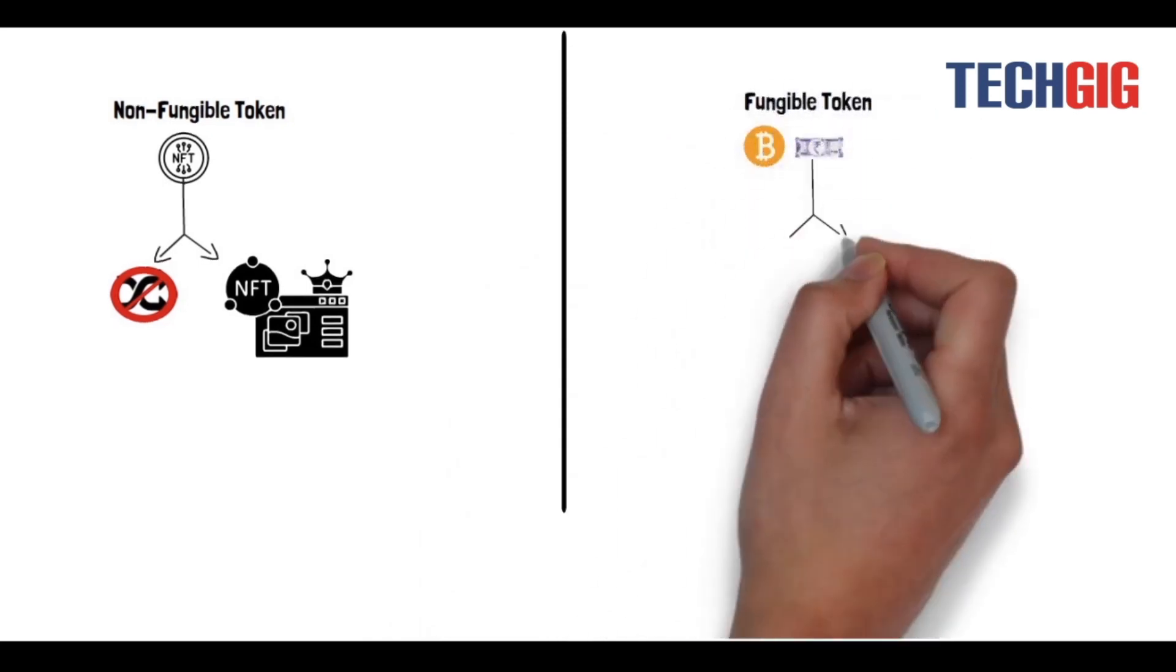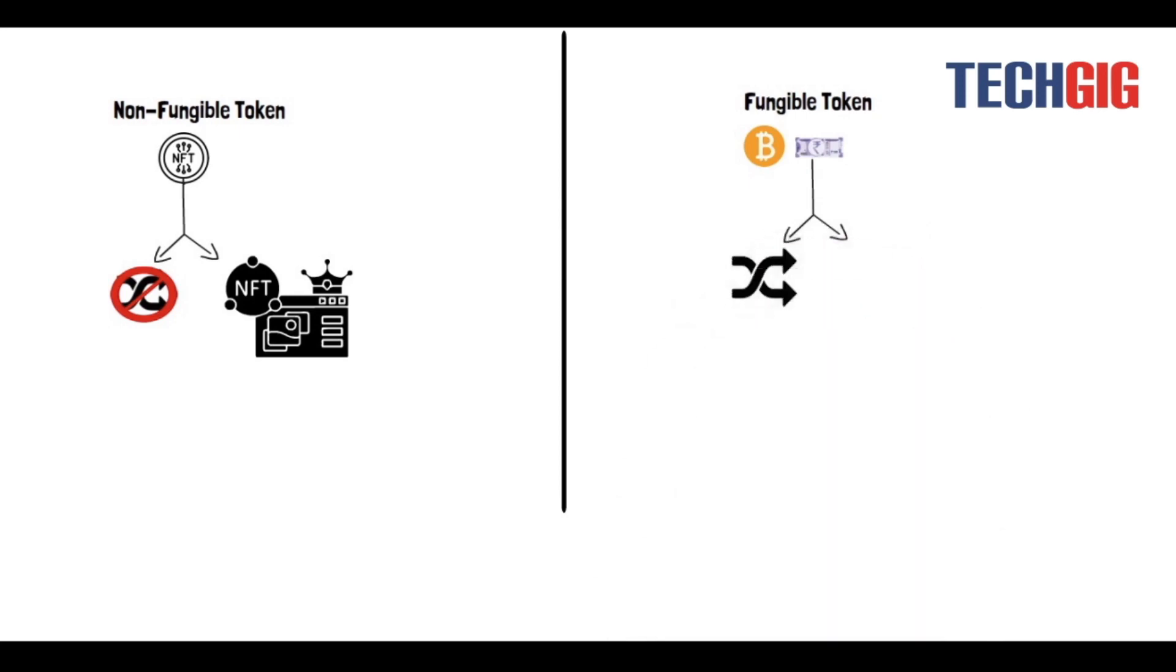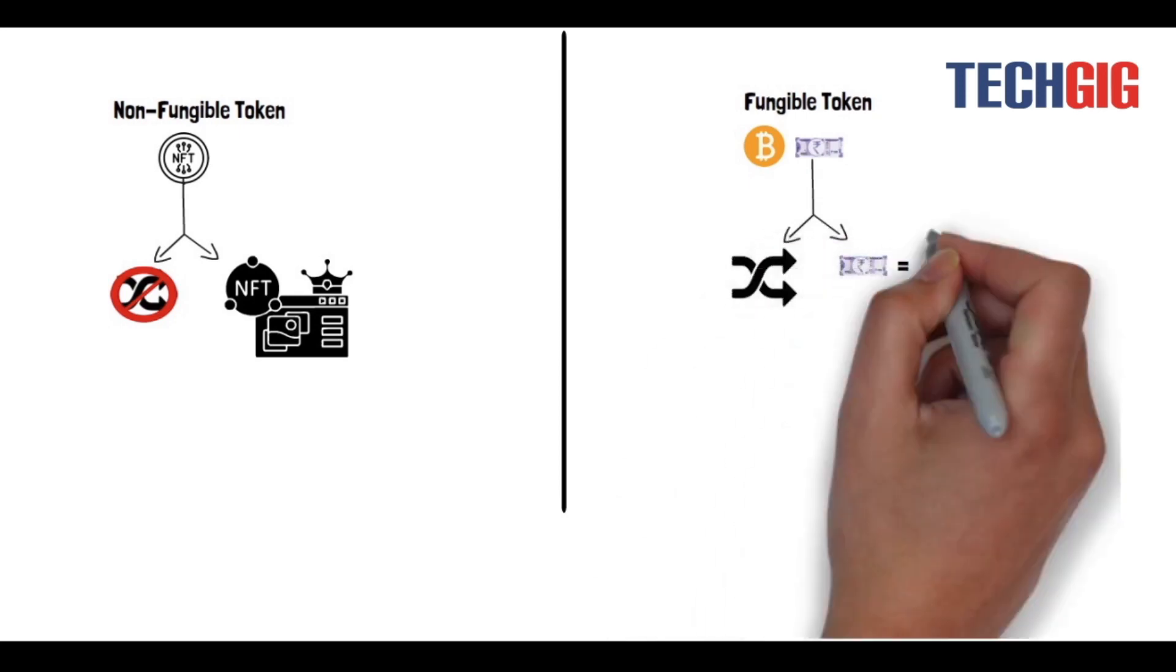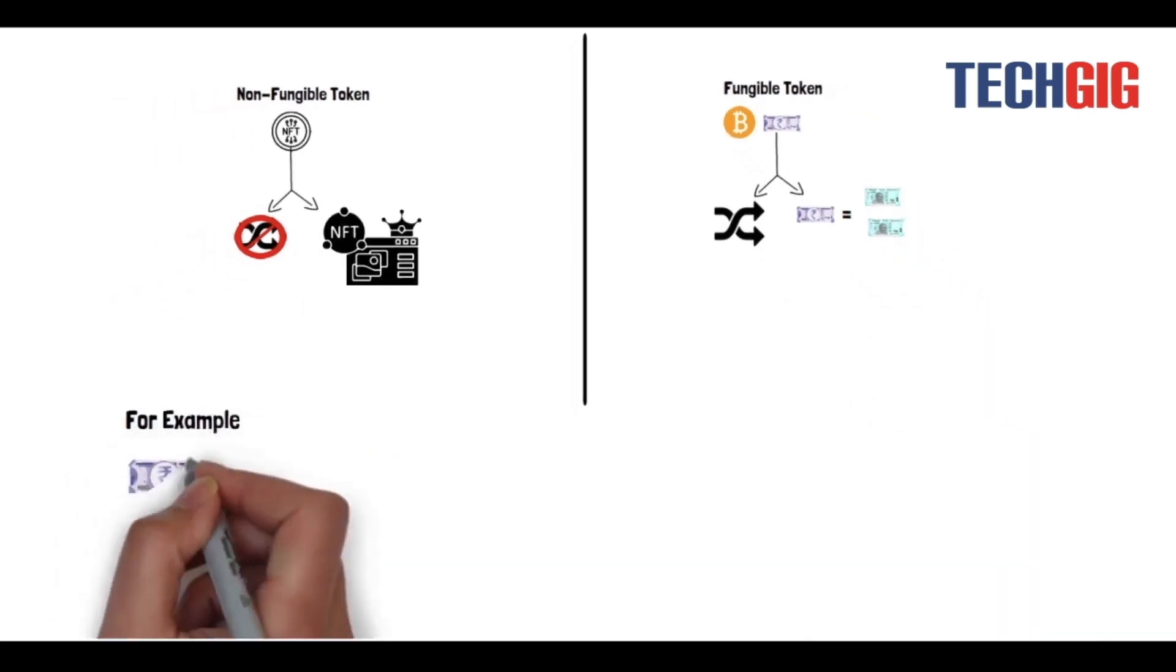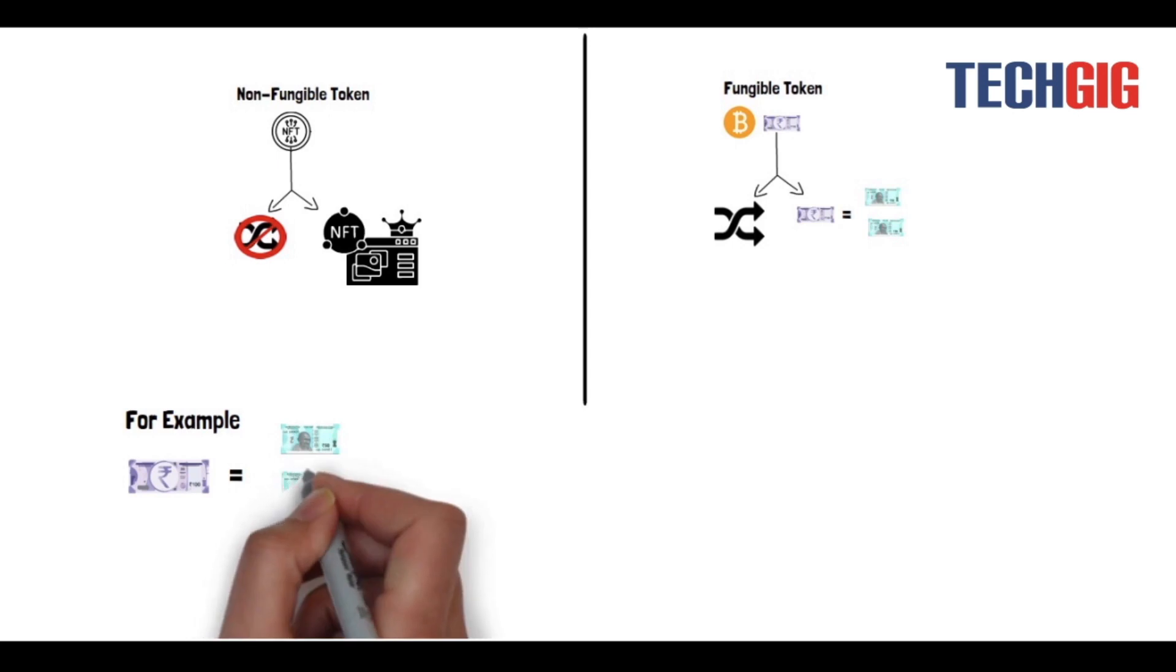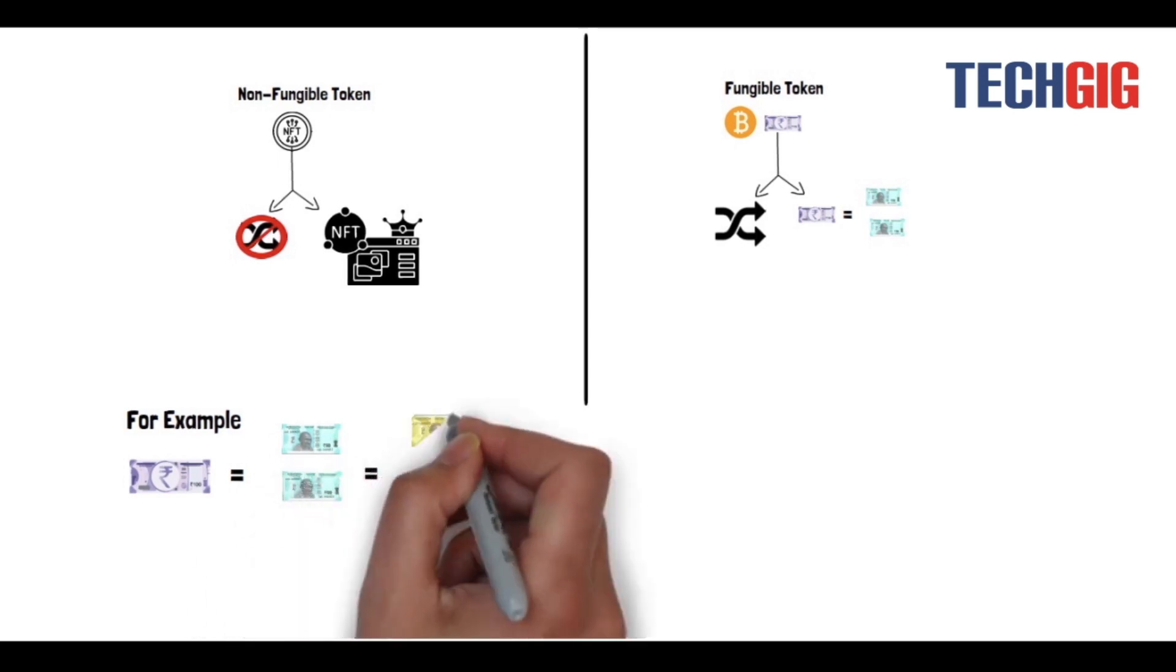On the other hand, fungible tokens are interchangeable and can be divided into smaller units to form the same value. For example, a 100 rupees bill is fungible as you can exchange it for 50 rupees bills or 5 twenty rupees bills.